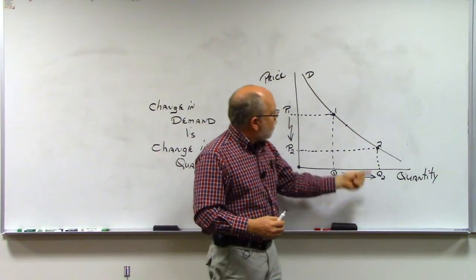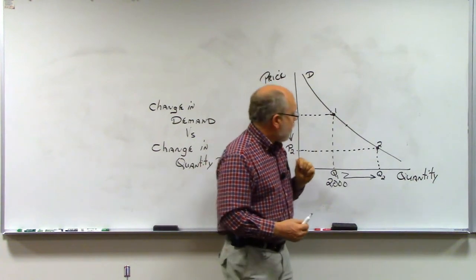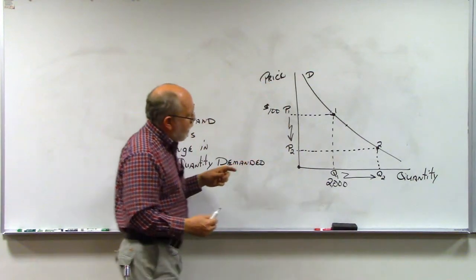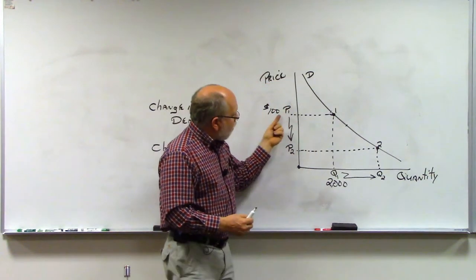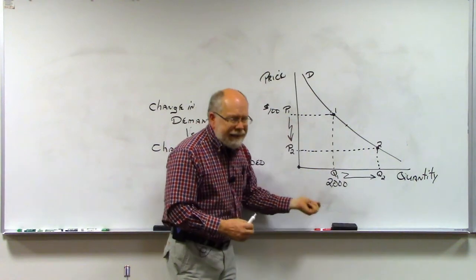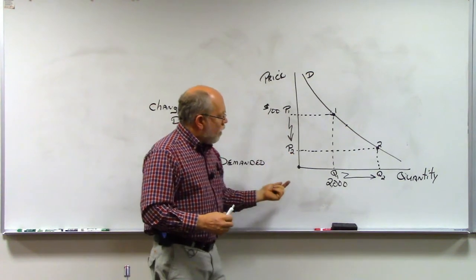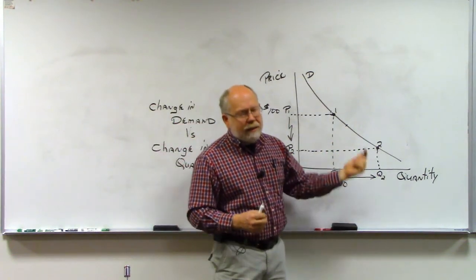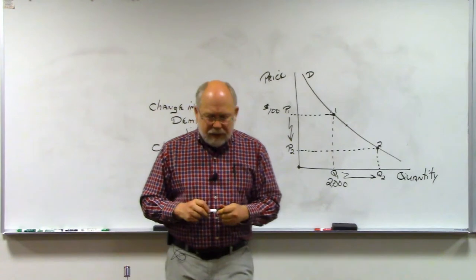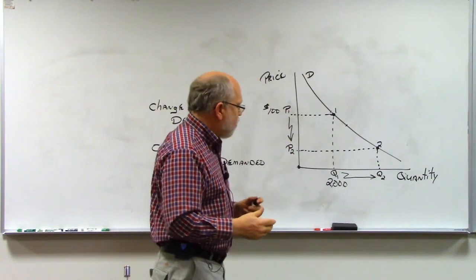At P2, we come over here. We hit the demand curve at point 2, and we have a quantity 2 associated with this price at point 2. So every point on this curve has a price associated with it and has a quantity associated with it. So in the case of demand, as we lower the price, we are increasing, now here's the important term, we're increasing the quantity demanded.